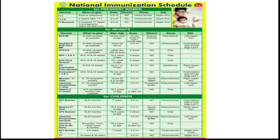OPV first, second, and third doses are given at 6 weeks, 10 weeks, and 14 weeks respectively, up to a maximum age of 5 years. The dose is 2 drops oral. IPV — Inactivated Polio Vaccine — has two doses: first dose at 6 weeks and second dose at 14 weeks, up to 1 year of age. The dose is 0.1 ml, intradermal, right upper arm.